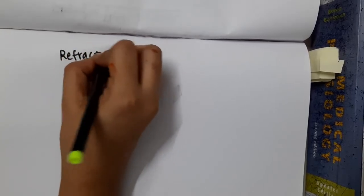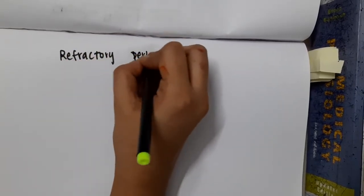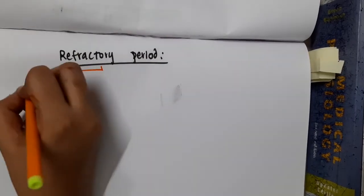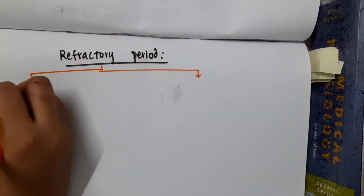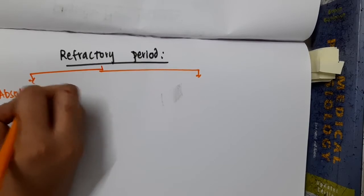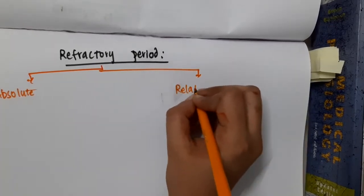Let us now learn some important points about refractory period. The refractory period is of two types. One, we have absolute refractory period. Second, we have relative refractory period.